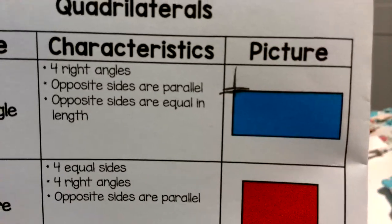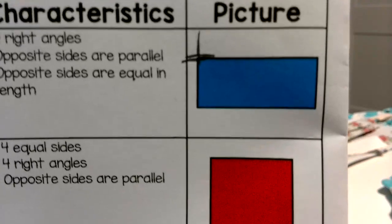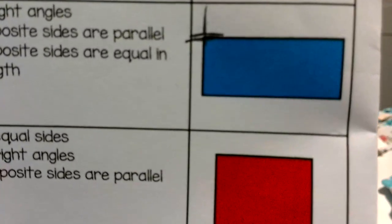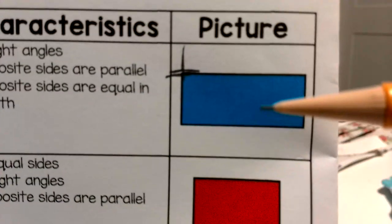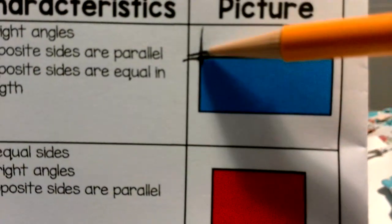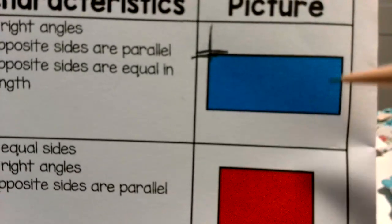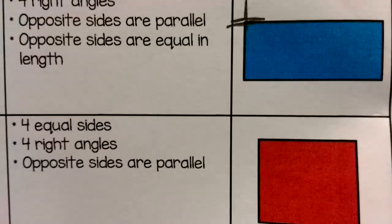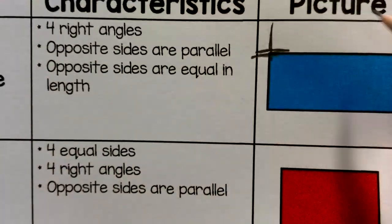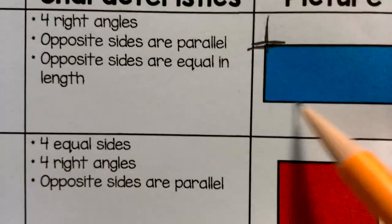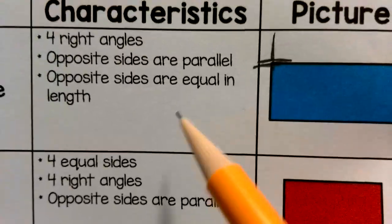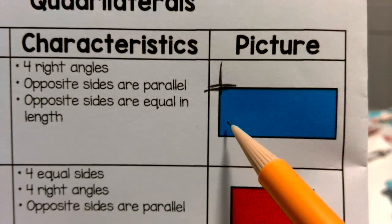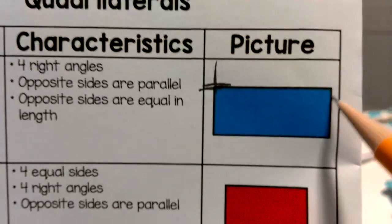Now it says opposite sides are parallel. Opposite is like hot and cold, up and down. If you look at a shape, they mean an opposite pair, like your eyes — one on your left side and one on your right. This rectangle has a pair of parallel sides: here's one side, here's the other side, and together they make one pair of parallel lines. So there's one set of parallel sides and two sets of parallel sides. The opposite sides are also equal in length.